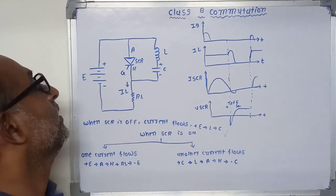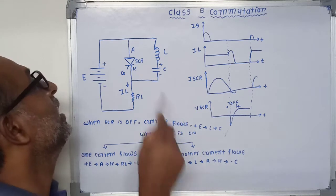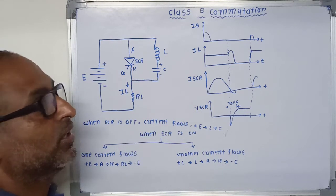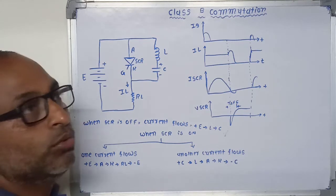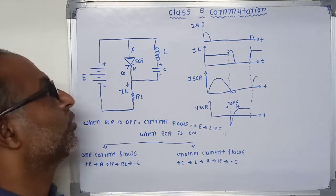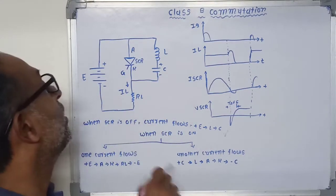When the SCR is turned on by applying a gate pulse, the current flows in two directions. That means there are two currents flowing through this circuit.